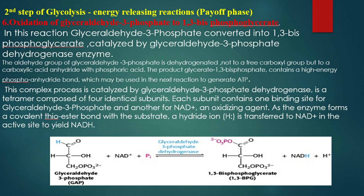After the formation of glyceraldehyde-3-phosphate, the second phase of glycolysis starts. In this phase, oxidation of glyceraldehyde-3-phosphate occurs. Is reaction mein enzyme glyceraldehyde-3-phosphate dehydrogenase glyceraldehyde-3-phosphate ko convert karta hai. Is reaction mein glyceraldehyde-3-phosphate mein present aldehyde group ka dehydrogenation hota hai, jisse free carboxyl group anhydride bond ke saath phosphate group ke jodne se 1,3-bisphosphoglycerate banta hai. The product 1,3-bisphosphoglycerate contains a high-energy phosphoanhydride bond which may be used in the next reaction to generate ATP. Glyceraldehyde-3-phosphate dehydrogenase enzyme is a tetramer composed of four identical subunits. Each subunit contains one binding site for glyceraldehyde-3-phosphate and another for NAD. As the enzyme forms a covalent thioester bond with the substrate, a hydride ion is transferred to NAD in the active site, forming NADH.